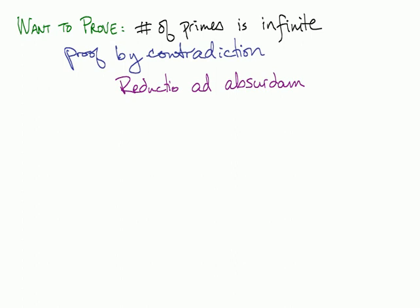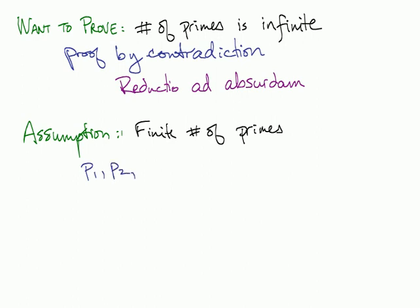So what we do is we start with our assumption. We want to prove we have an infinite number of primes. So, I want to assume the opposite, finite number of primes. What does that mean? That means I can make a list,